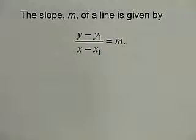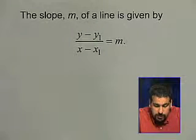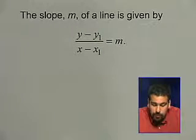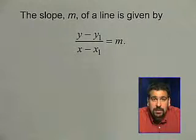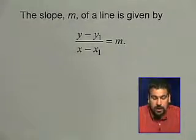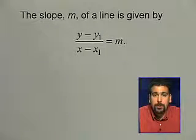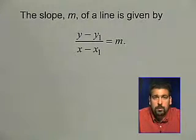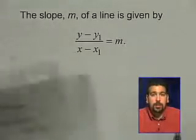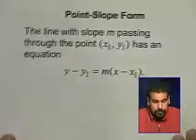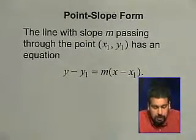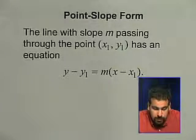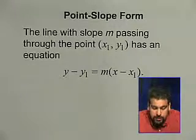Let's get started by reviewing the slope formula. The slope m of a line is given by: y minus y1 over x minus x1 equals the slope, where x1, y1 is any fixed point on our given line. If we take this equation and multiply both sides by x minus x1, what results is the equation of a line. The point-slope form: the line with slope m passing through the point x1, y1 has the equation y minus y1 equals m times x minus x1.